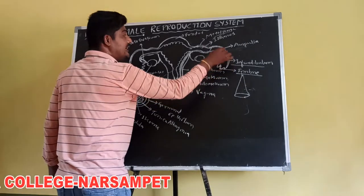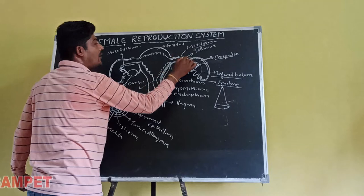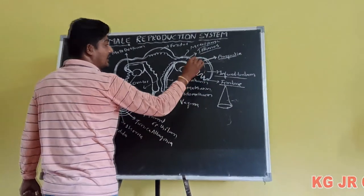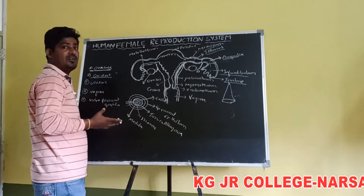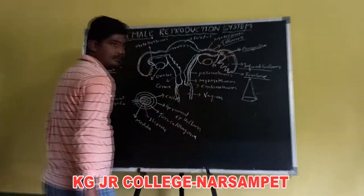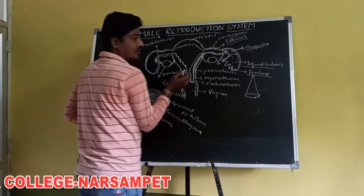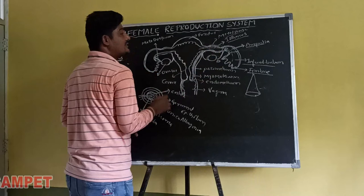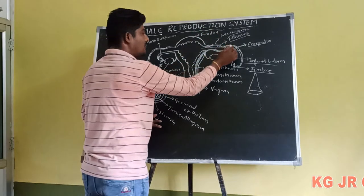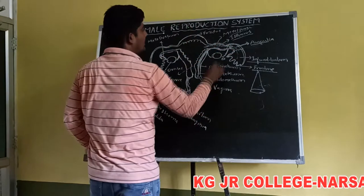The infundibulum leads to a wider part called the ampulla. The ampulla leads into a narrow tube-like structure called the isthmus, which leads into the uterus. The function of the oviduct is as the fertilization site — fertilization takes place at the isthmo-ampullary junction. The oviduct conducts the ovum or zygote towards the uterus by peristaltic movements, whether it is a fertilized ovum (zygote) or an unfertilized ovum.